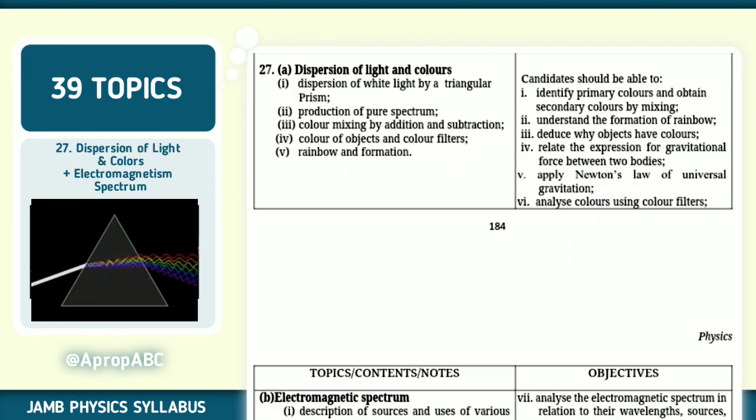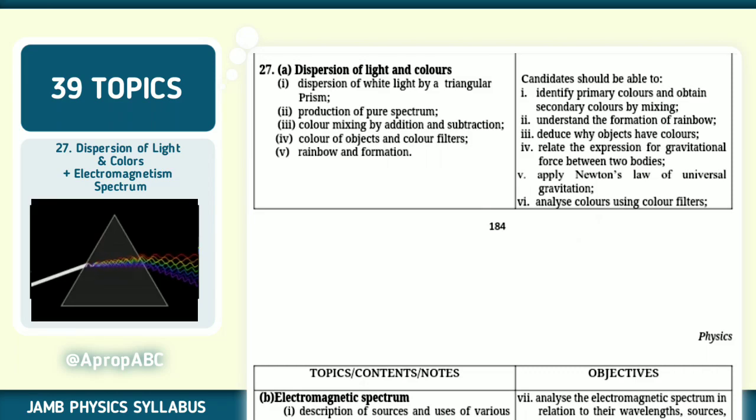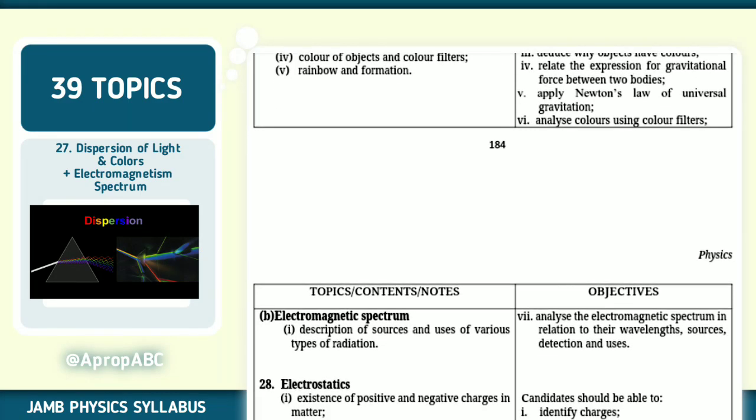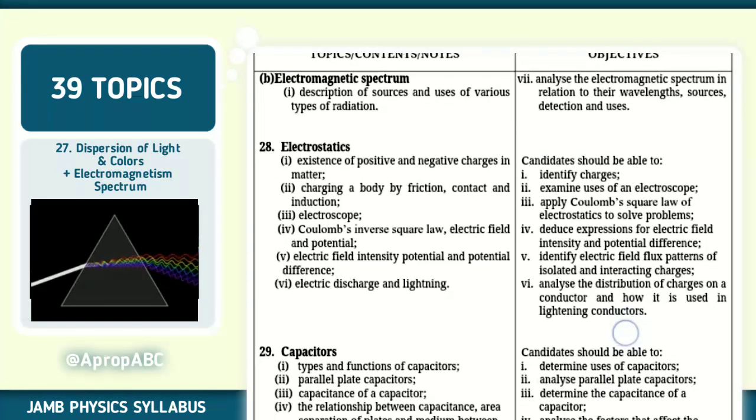Number 27 out of 39, dispersion of light and colors. The second one under this, we have electromagnetic spectrum. Understanding rainbow formation, color of objects and color filters. You can analyze all of these colors. Make sure you also know how to describe sources of the electromagnetic spectrum, the types of radiation. Be able to analyze the spectrum in relation to wavelength, sources, detection and uses.